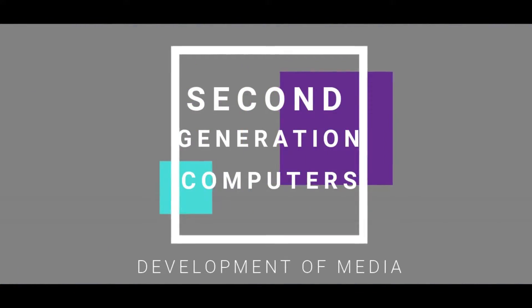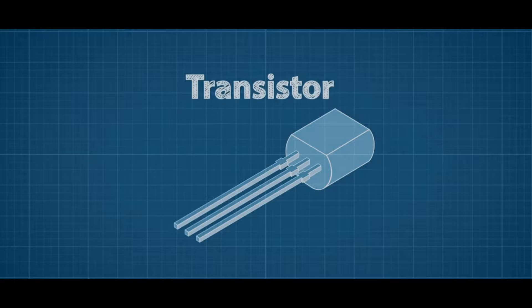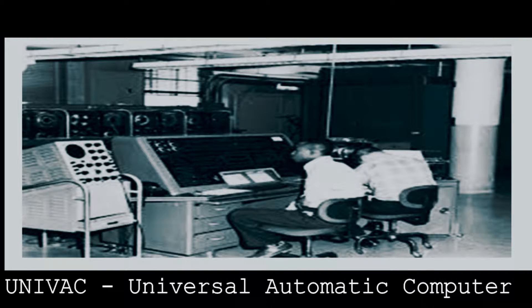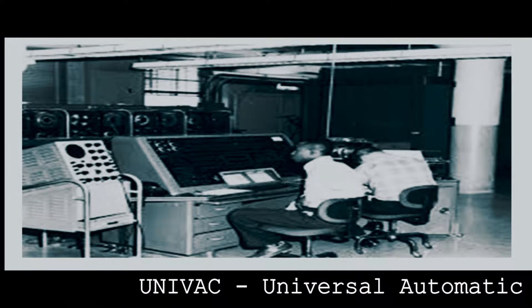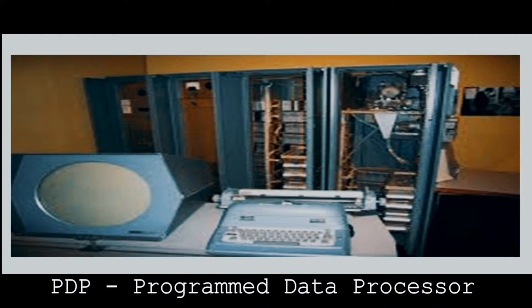Moving to the second generation of computers, the transistor was also used in this age. Some notable inventions include the UNIVAC — Universal Automatic Computer — and the PDP — Program Data Processor.